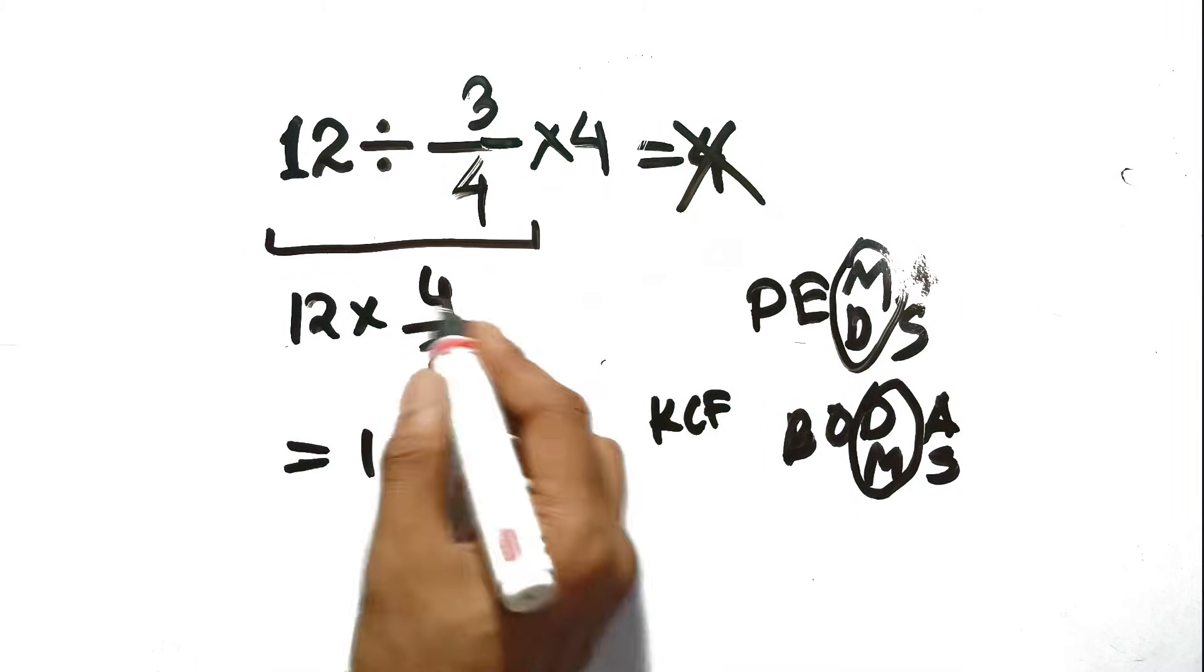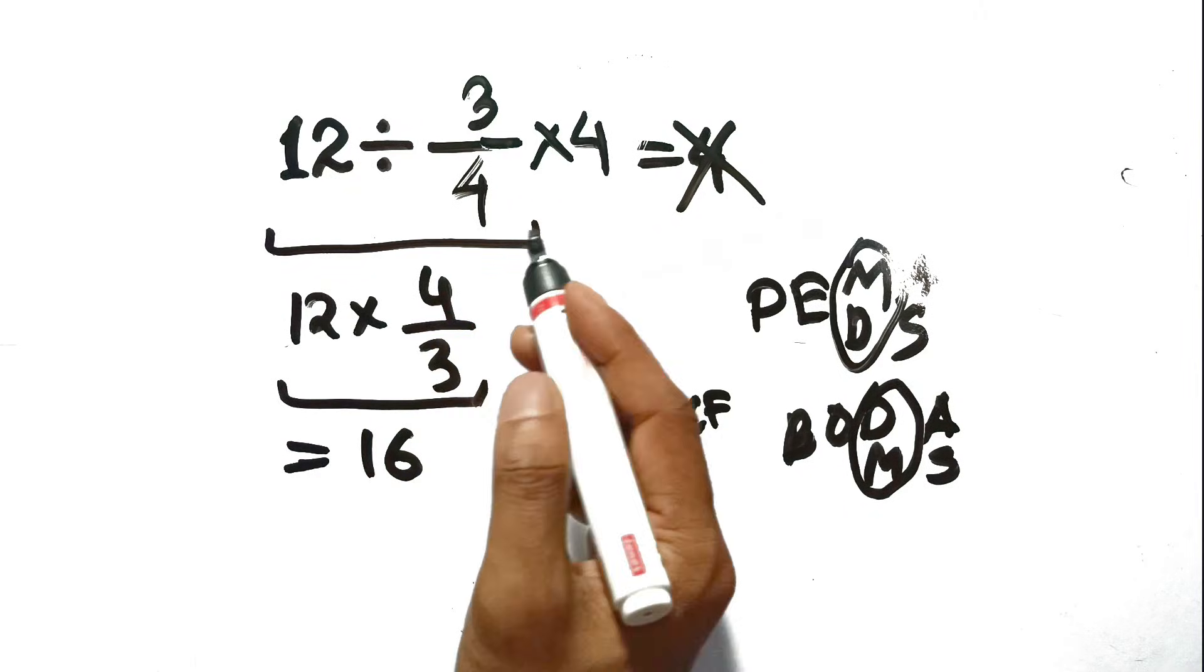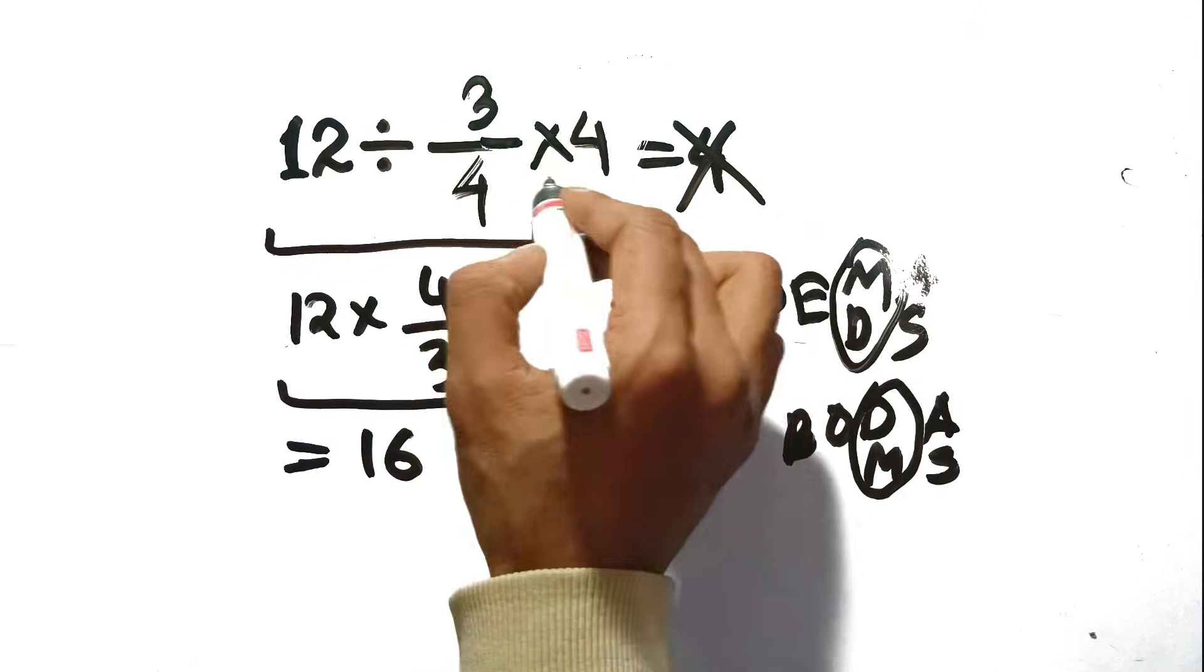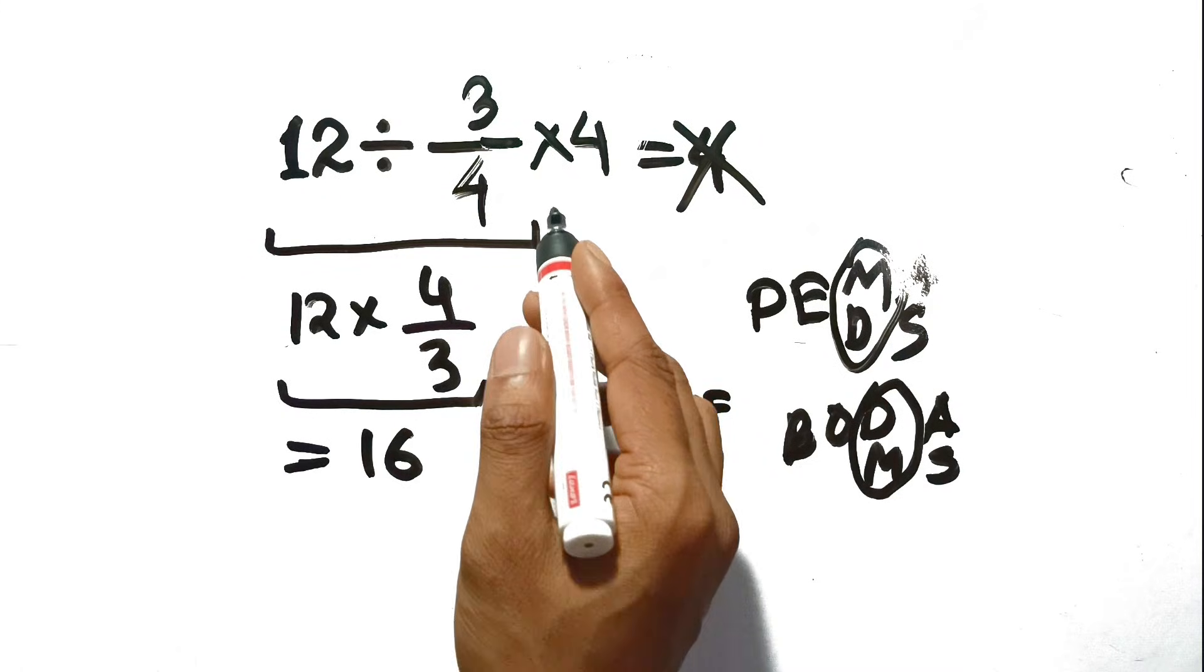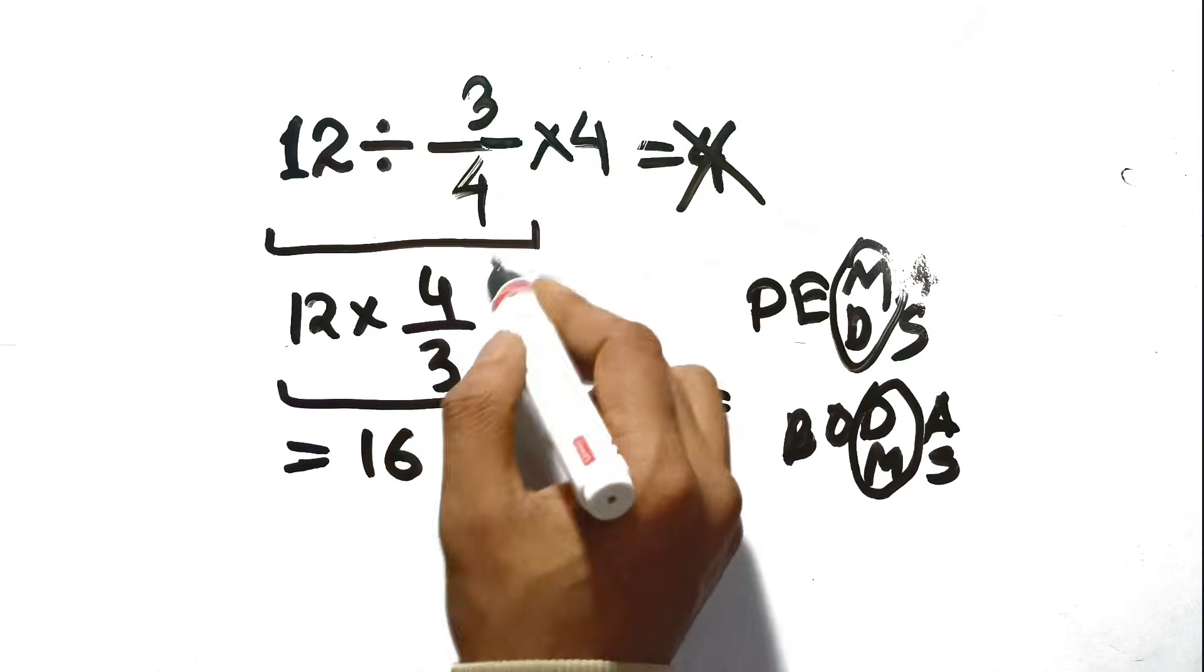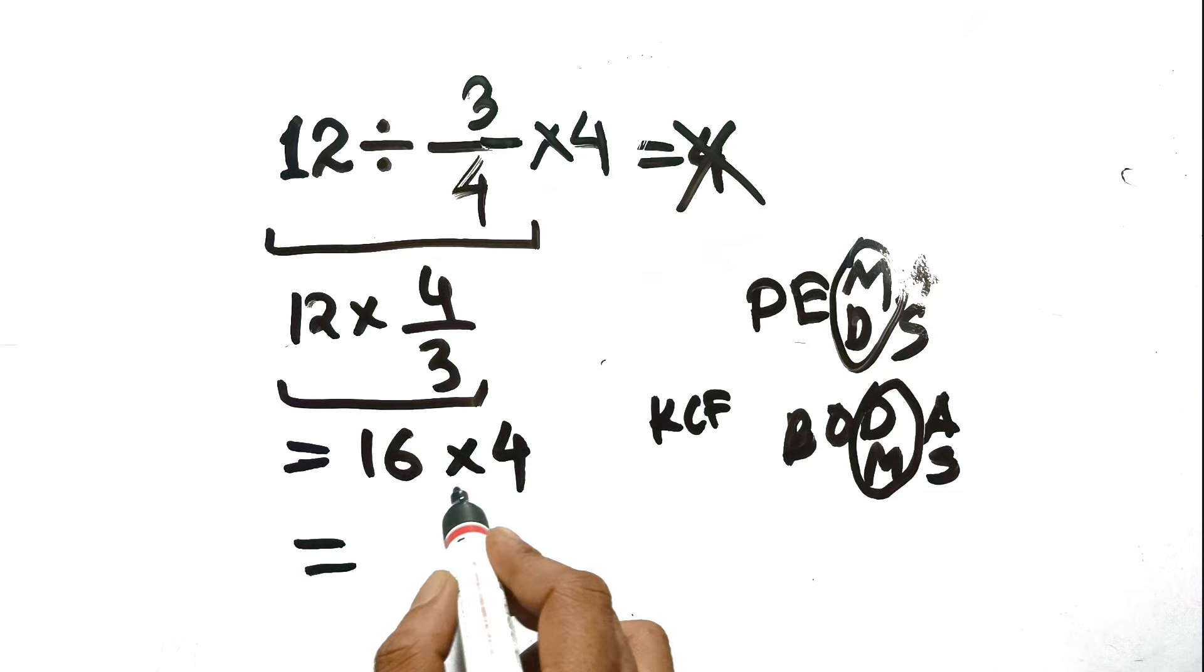Okay, are you with me? We have replaced that whole first section with the number 16, but we're not done. We still have that times 4 sitting at the end of the equation waiting for its turn. So now the problem is just 16 times 4, and if you work that out, 16 times 2 is 32, times 2 again is 64.